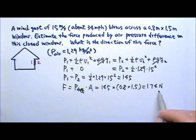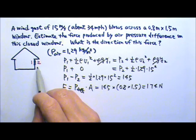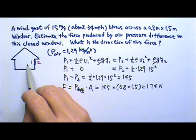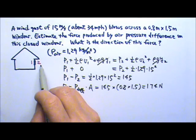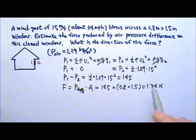Which direction would that force be? Outside the window, the speed is fast, therefore the pressure is low. So P1 is higher than P2. That means the pressure difference would push on the window outward. This is an outward force.